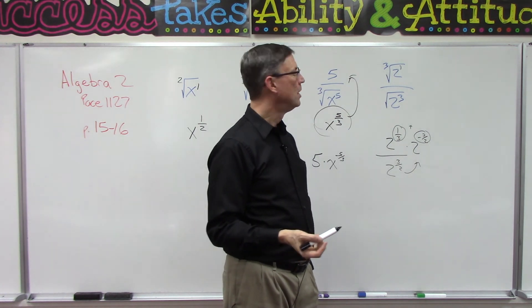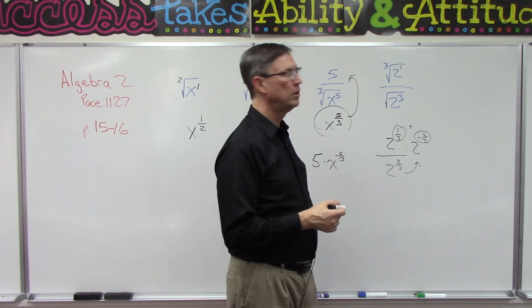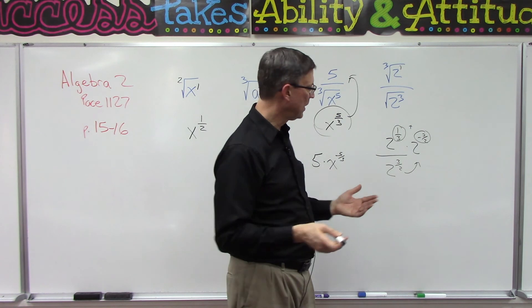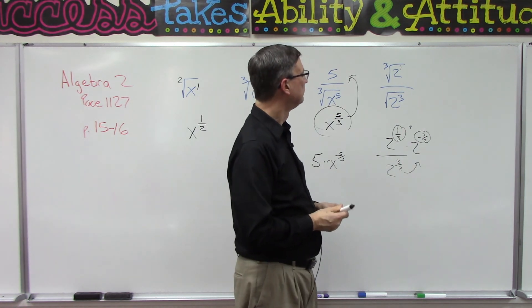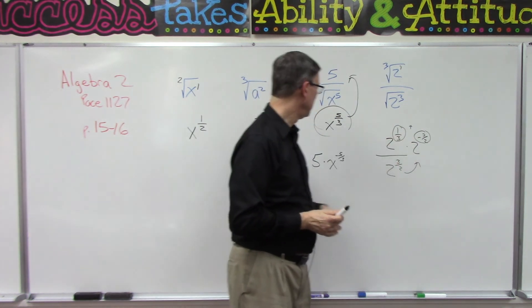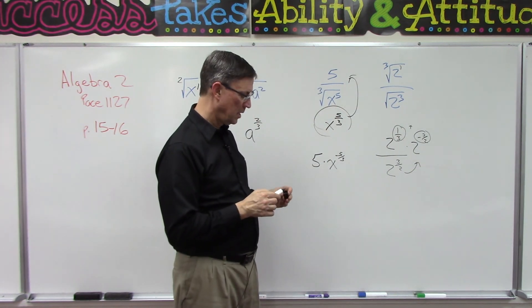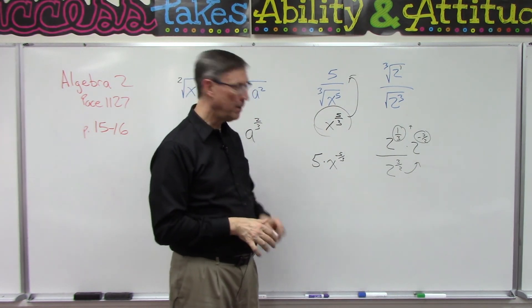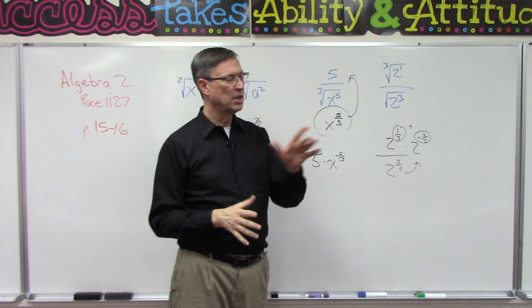These are just fractions, so we can just add 1 third plus negative 3 halves. You've got to get a common denominator and go through all that. I'm not going to do that for you right now - I'll let you finish this one. But when we bring it up, you add the exponents if the base is the same.